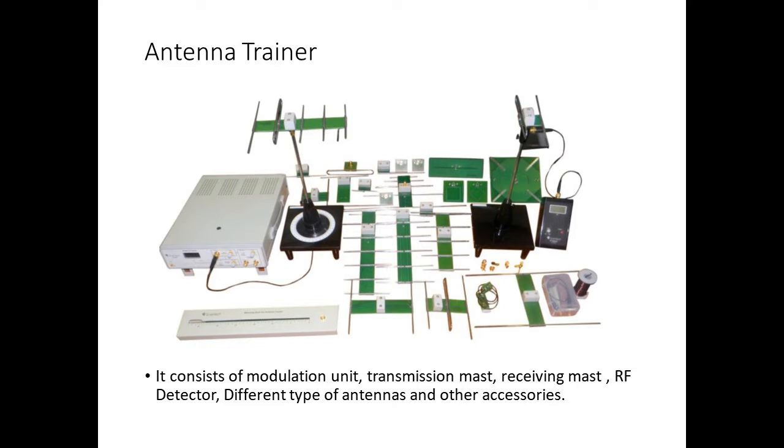As you can observe, the antenna trainer kit consists of various equipment and parts like modulation unit or the main unit, transmission mast, receiving mast, RF detector and different types of antennas and other accessories. Now let us study these parts in detail.